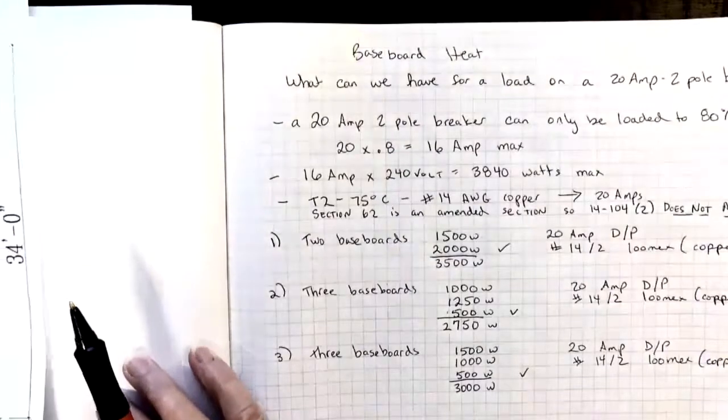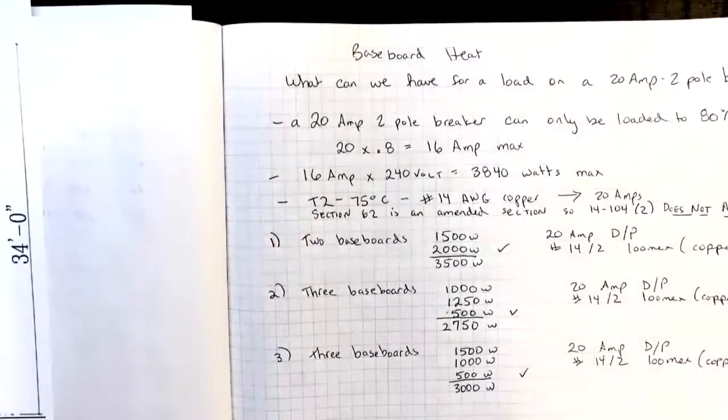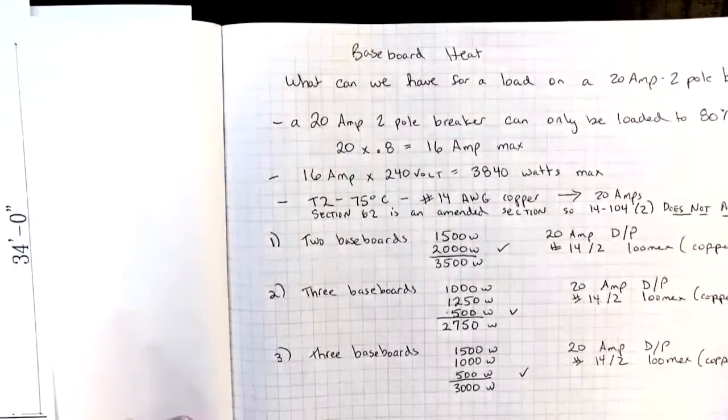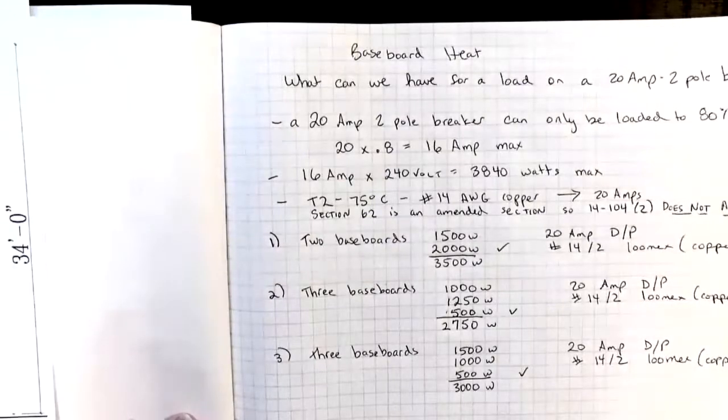So if we want to calculate out what size breaker and what size wire we can use, one of the things that we have to take into consideration is sort of ease and cost of the wire. So 14 gauge wire is very inexpensive, easy to work with. So let's look at what we can do with a 14-2 conductor.